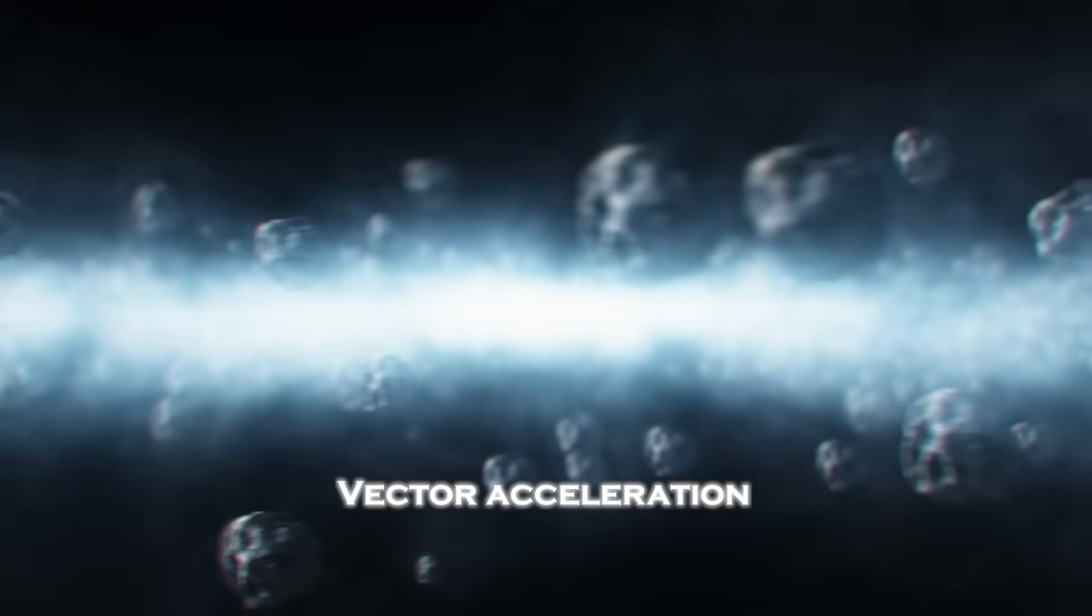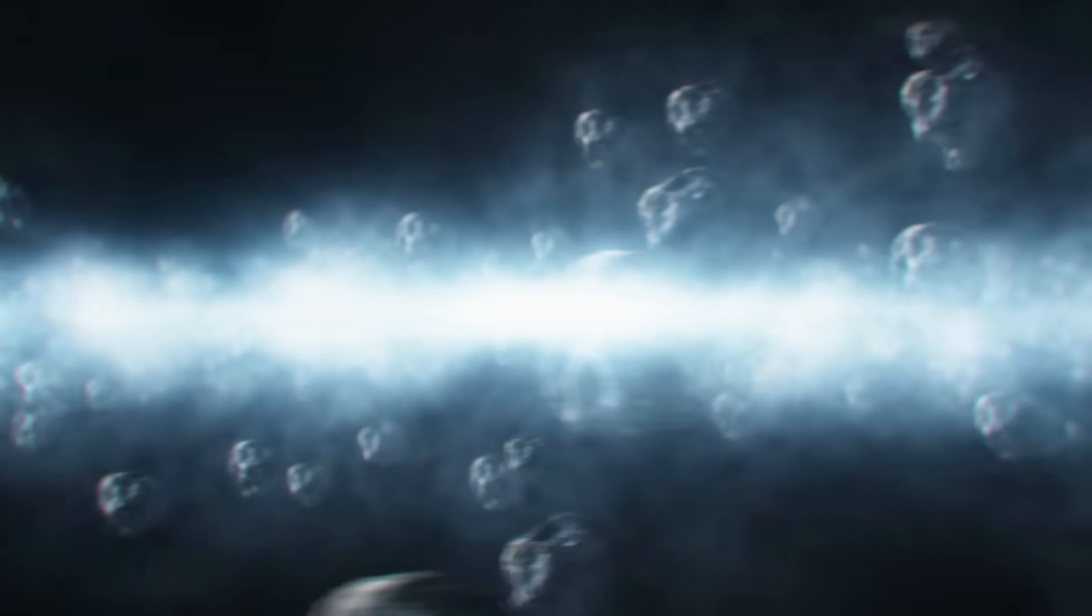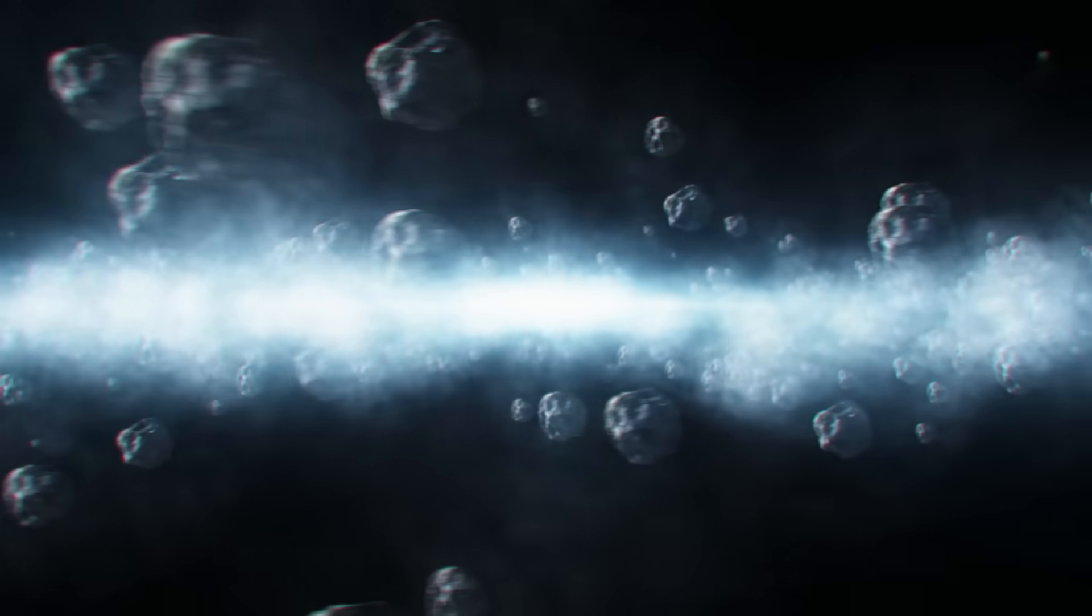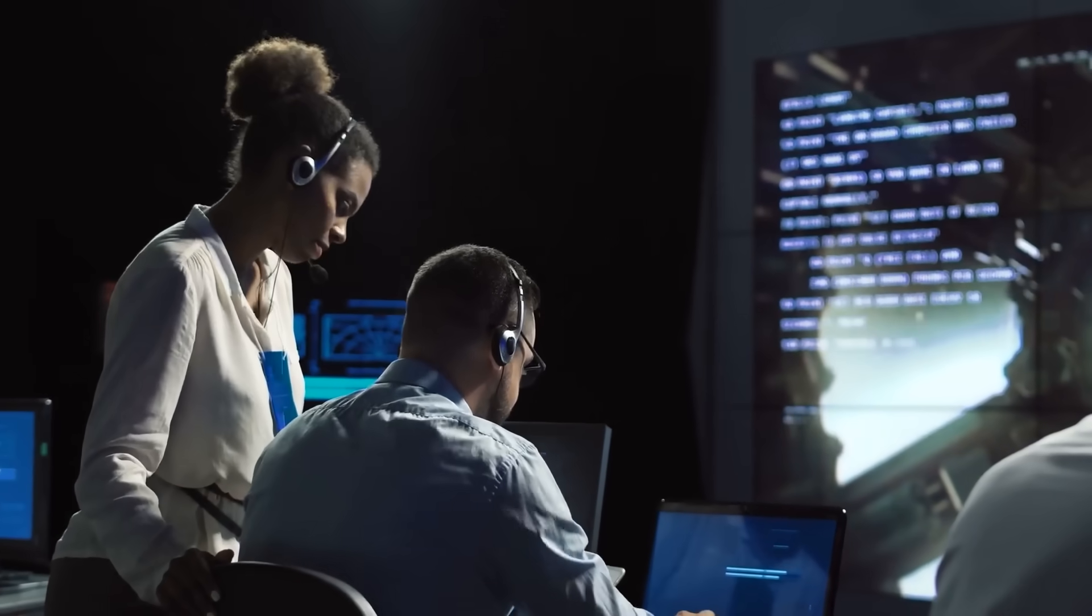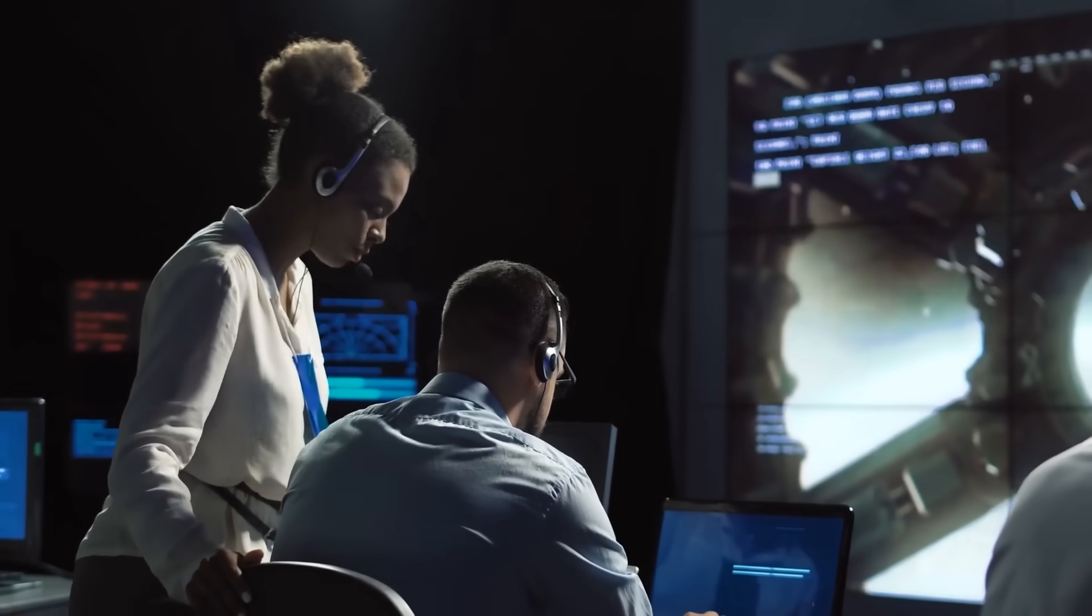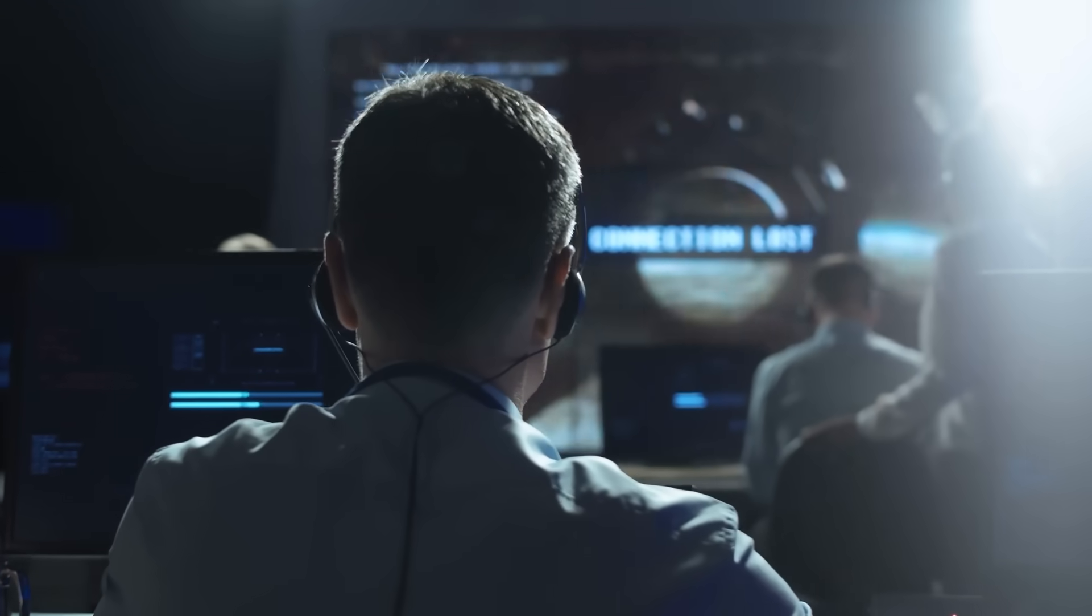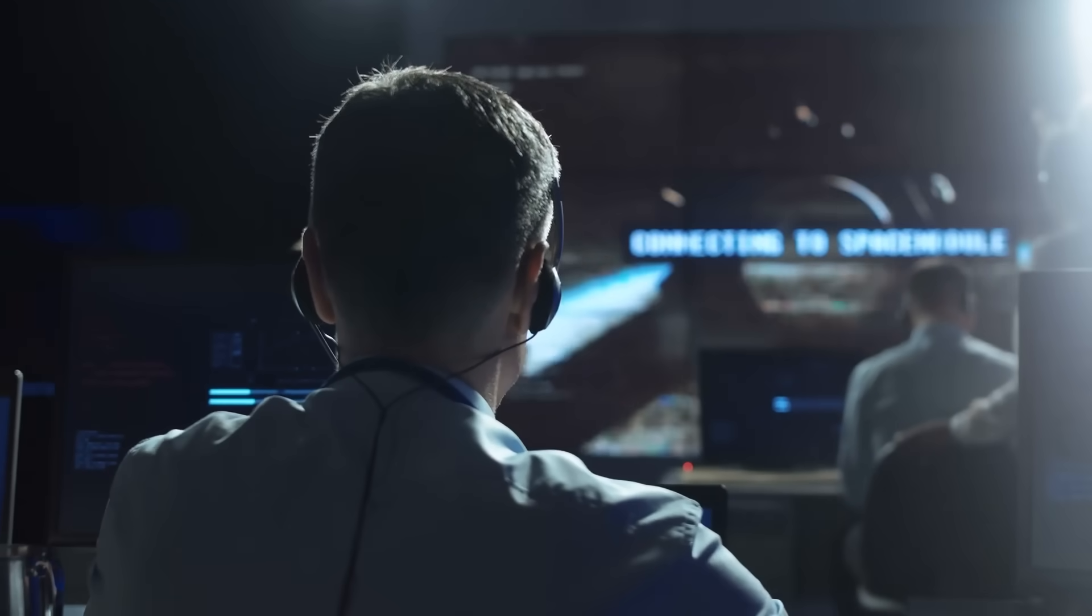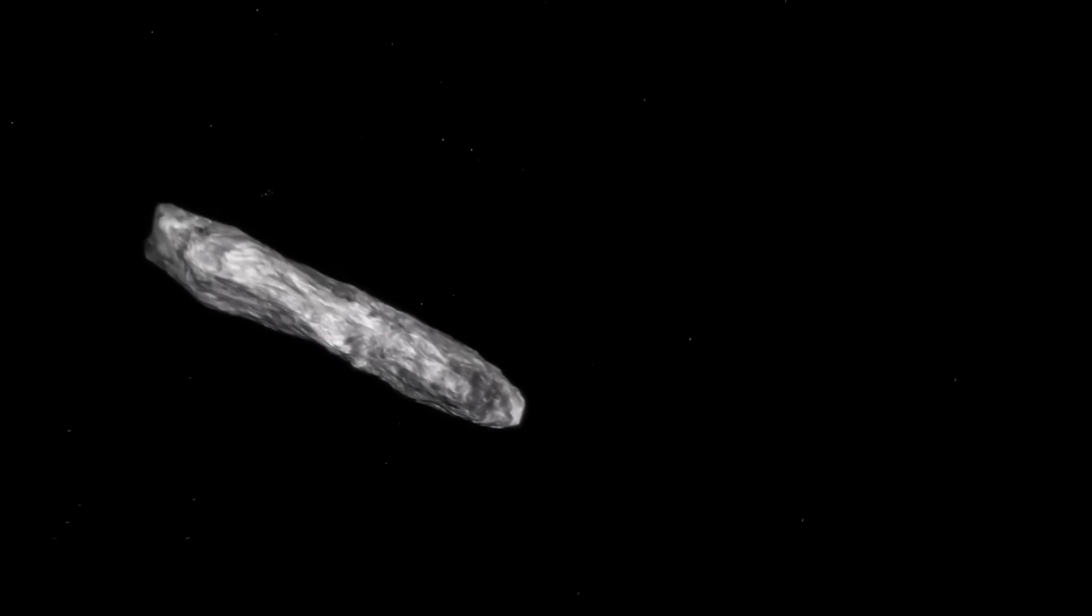This is vector acceleration, a motion profile that resembles intentional thrust more than random physics. NASA quickly reassured the world this isn't a threat to Earth. But that reassurance did nothing to calm scientists who understand what's actually happening. Because a comet should obey gravity. But Atlas isn't obeying anything.